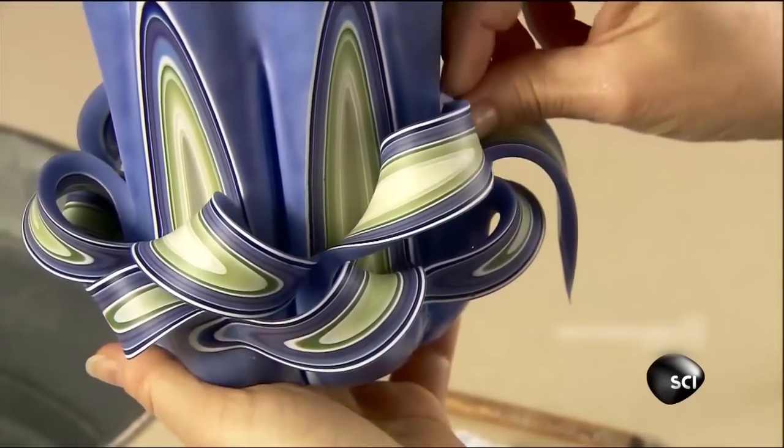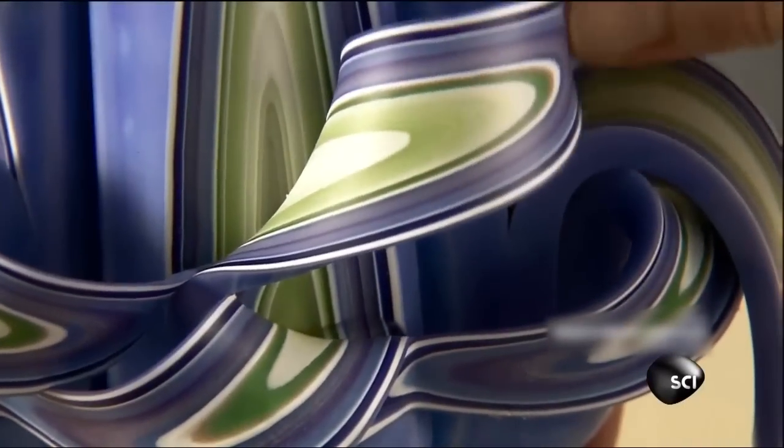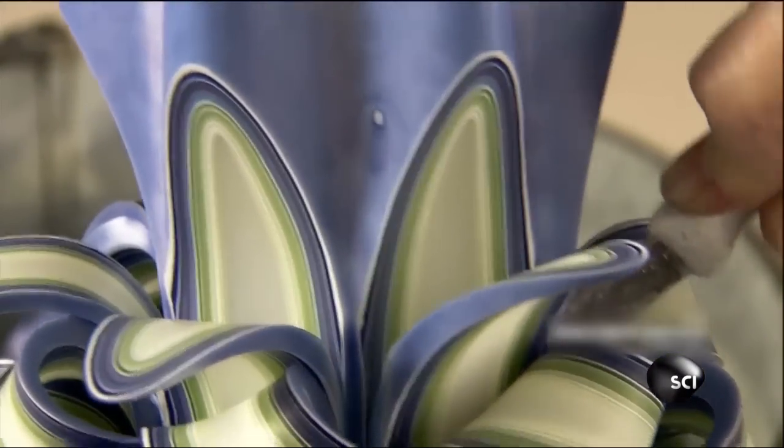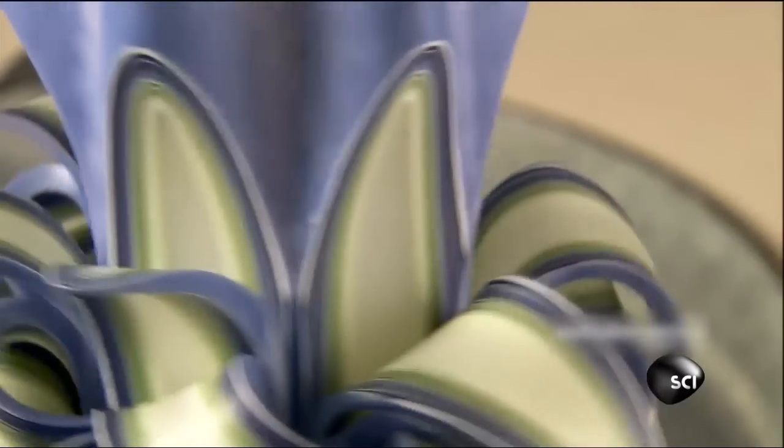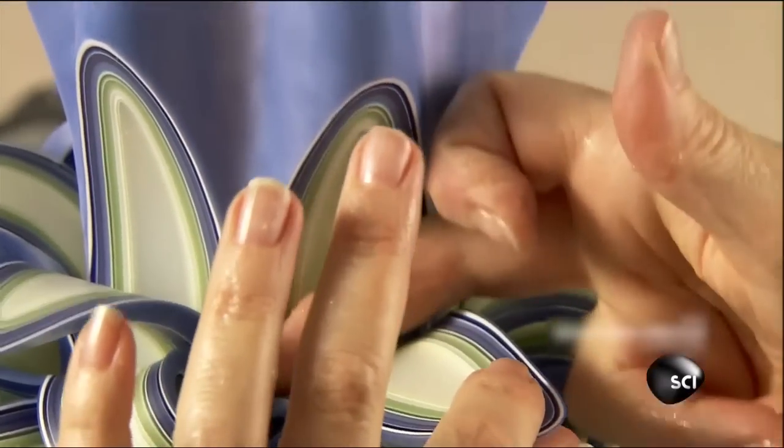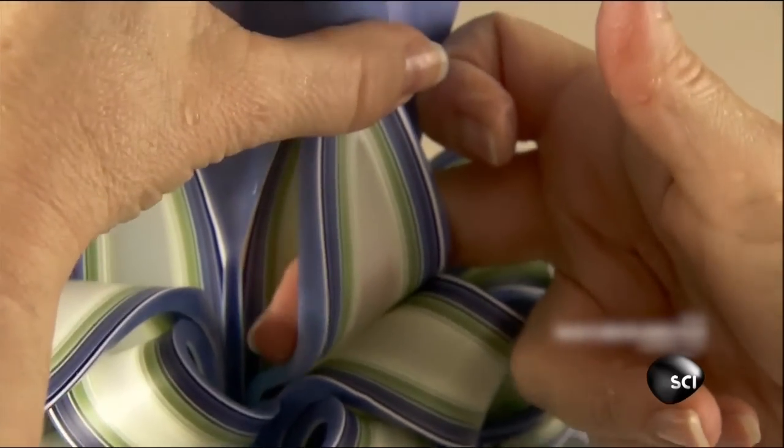On the second row, she curls each row in the opposite direction to the one before. She carves a total of four rows, with the last curls fixed upright.